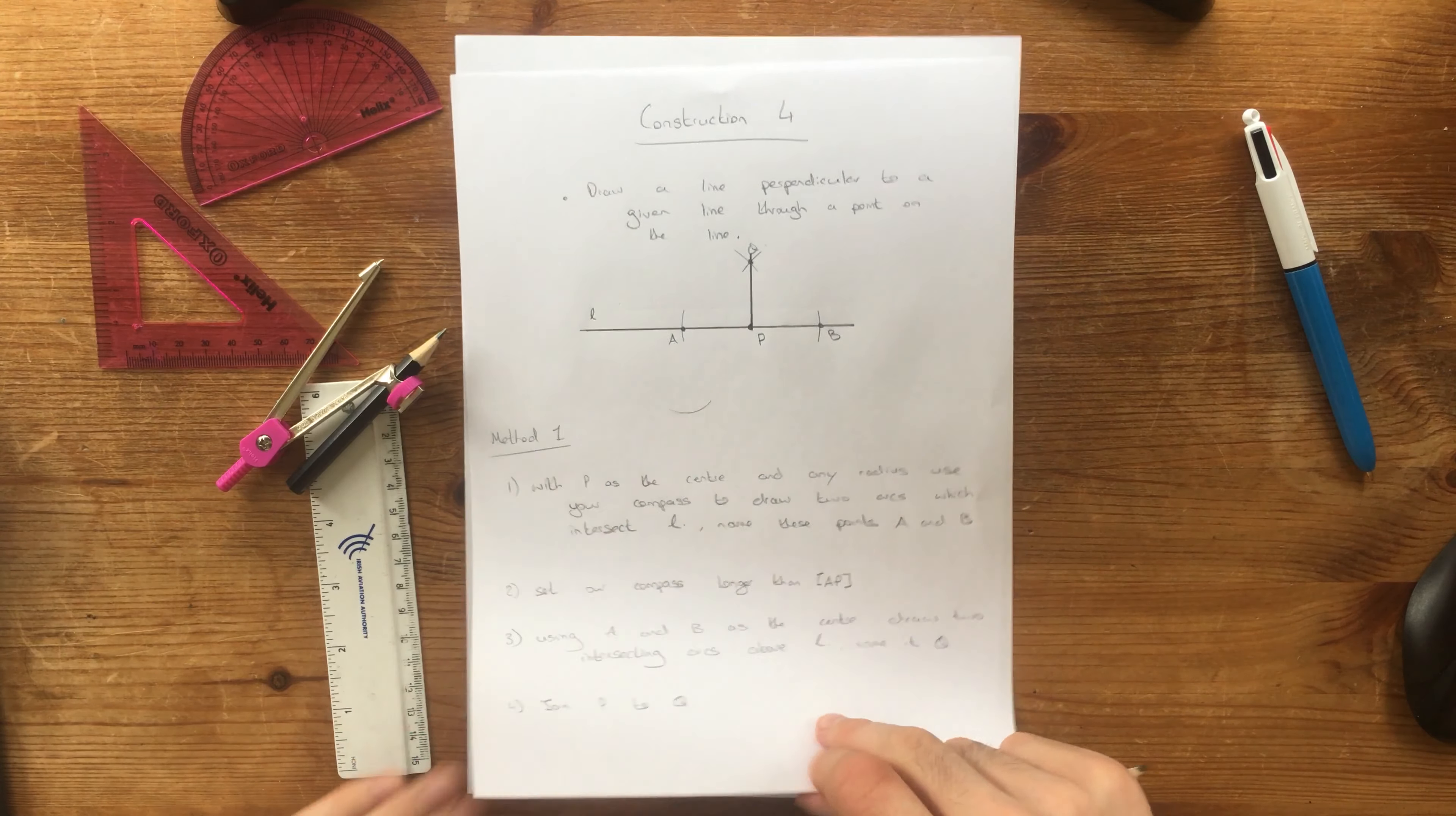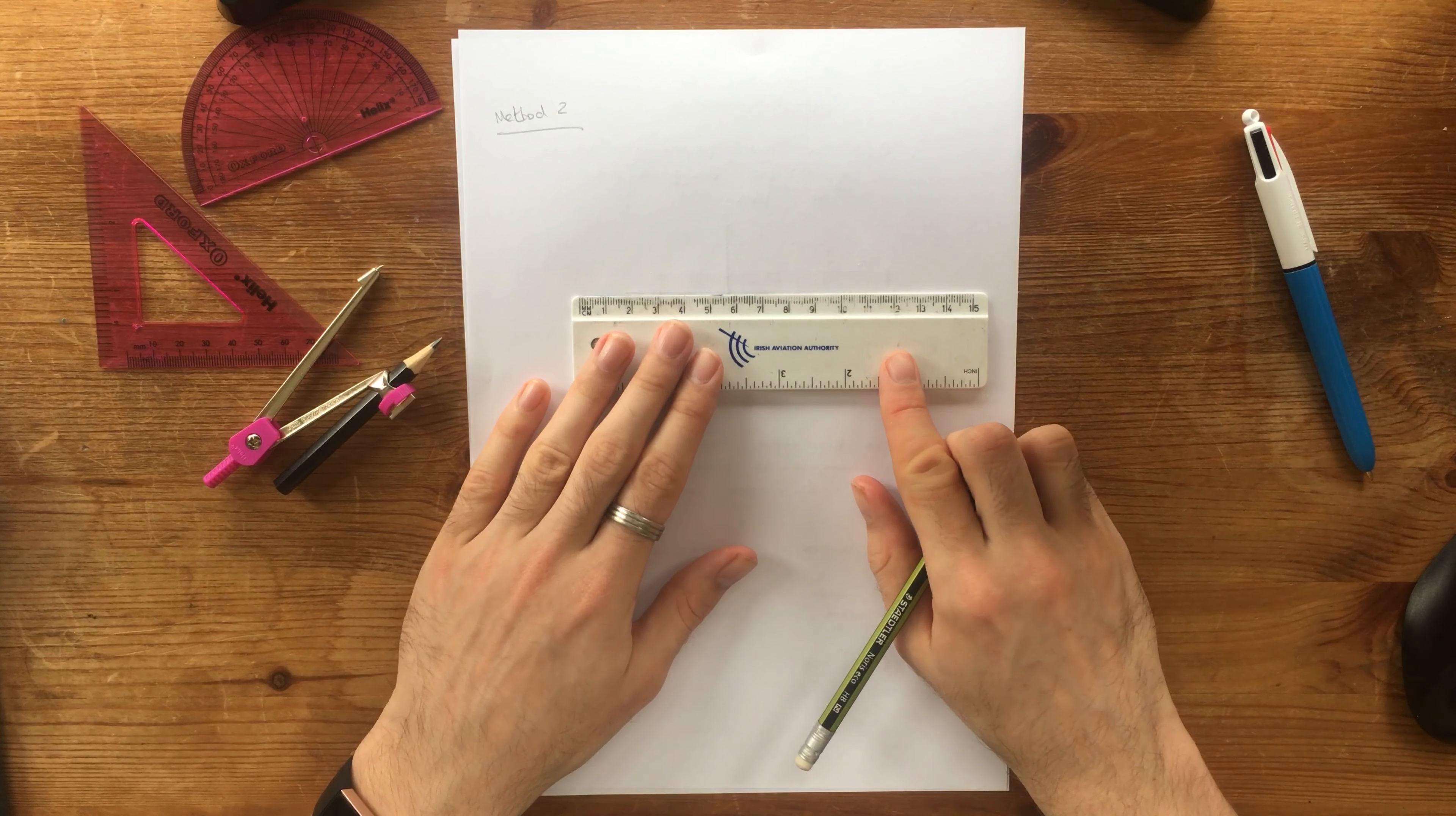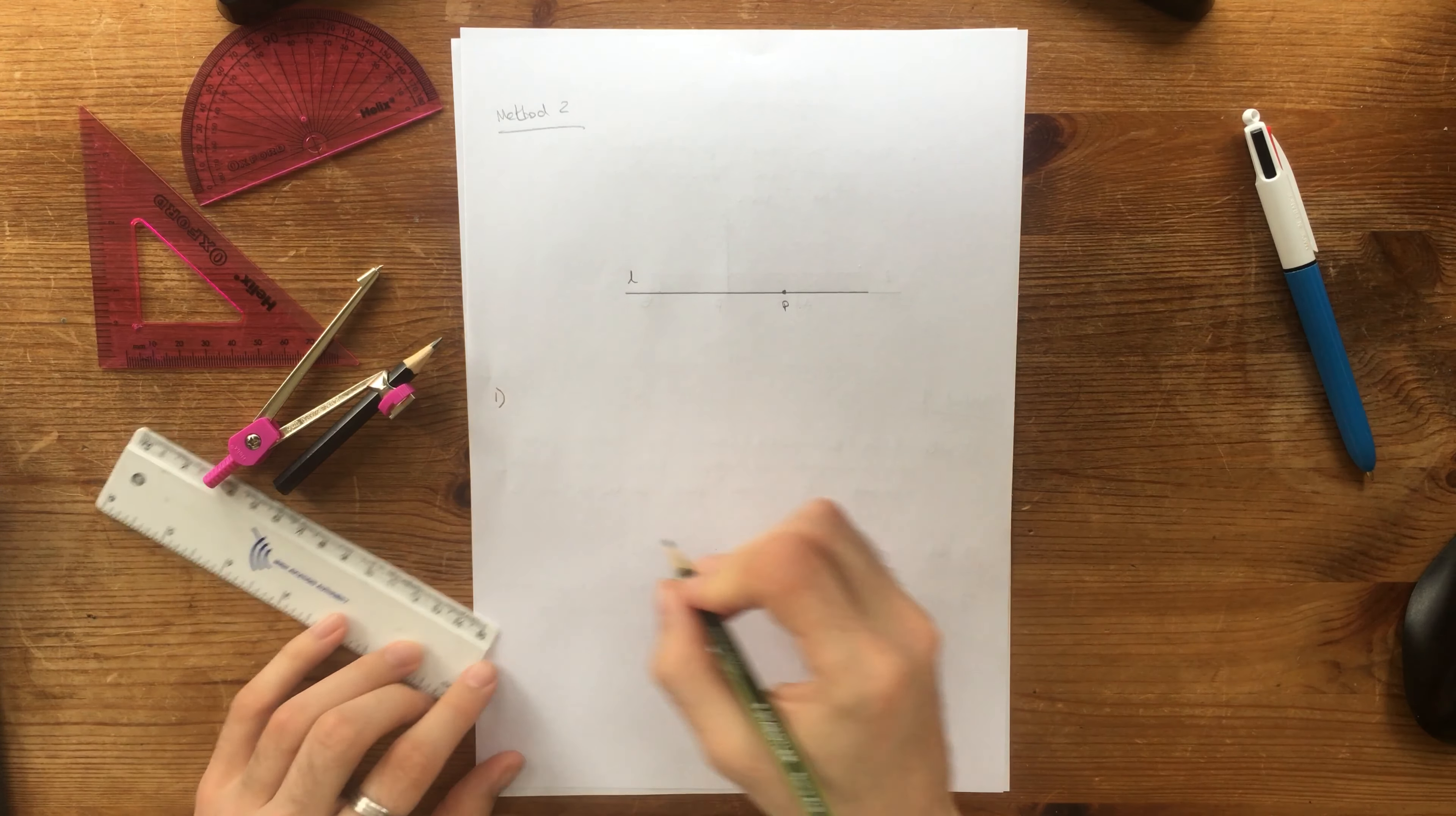But now we need to try out method two. We need to draw our line again. So we have some line, call it L again. We've got some point P. And the first step is place a set square at point P.